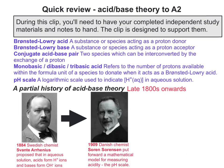A little bit later, in 1909, a Danish chemist called Soren Sorensen was the first person to formally propose the idea of a mathematical model to try and measure acidity. This was called the pH scale, pH standing for power of hydrogen.